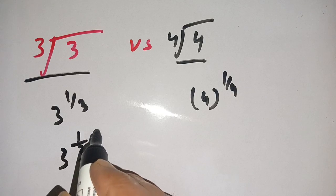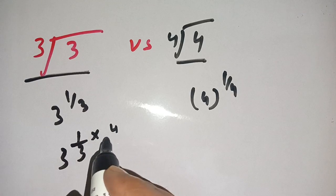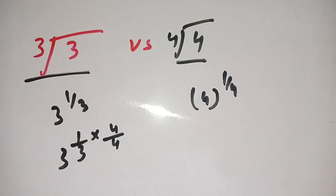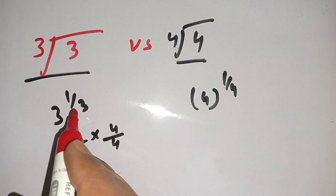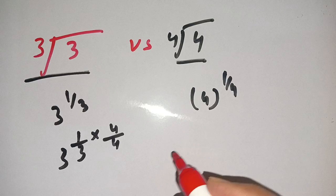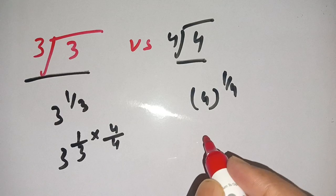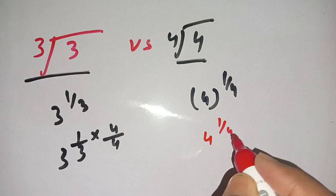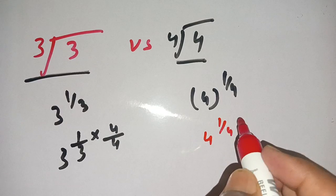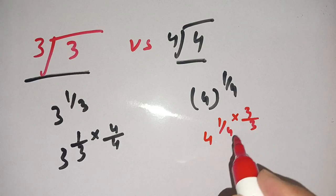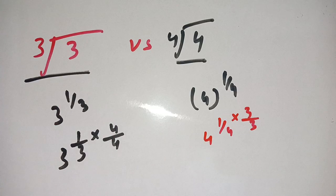On the next step, we can write three to the power of one divided by three, and multiply the exponent by four over four — which has no impact on the value. The same case applies here: four to the power of one divided by four, multiplied by three over three.